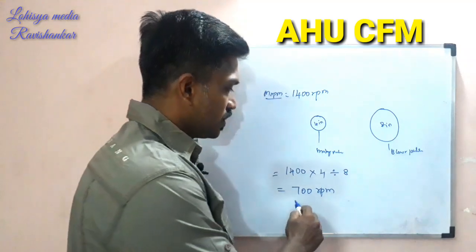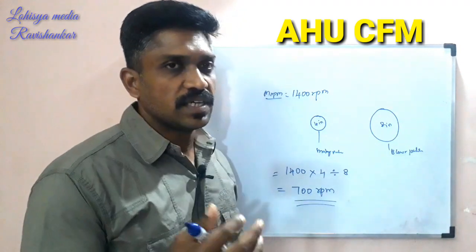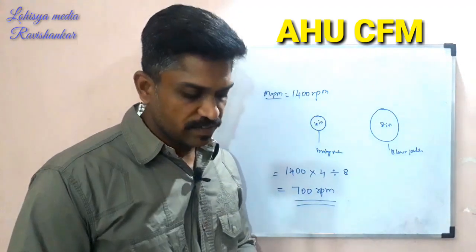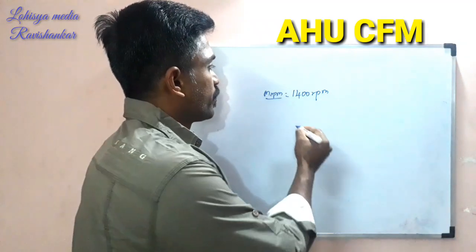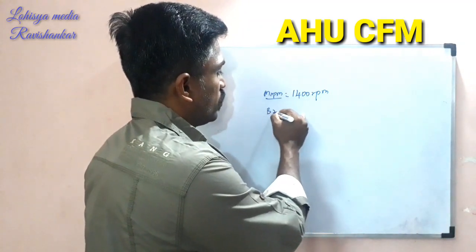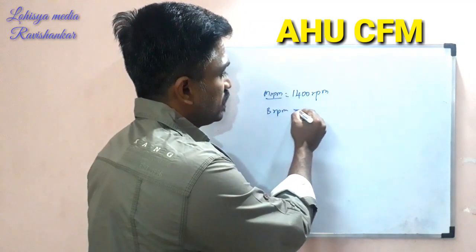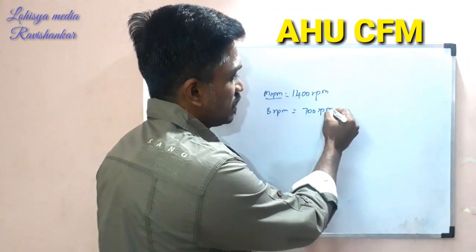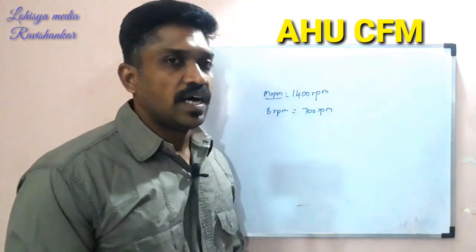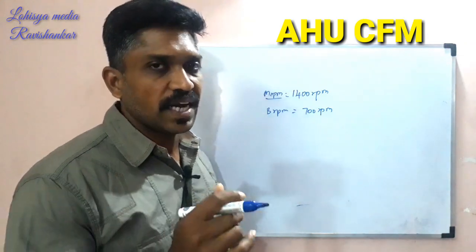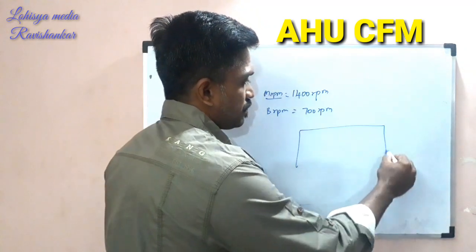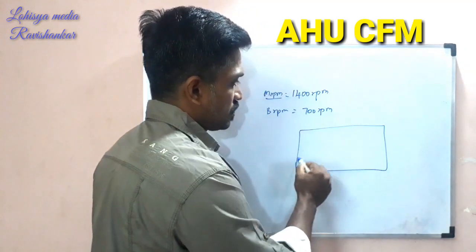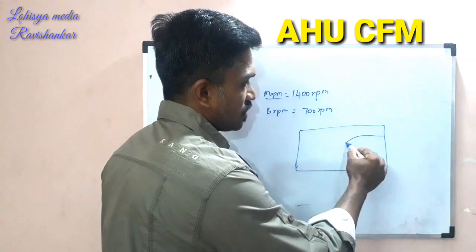Now, at 700 RPM, you will find the CFM. The blower air RPM is 700. You will find the static pressure — this is the static pressure. This is the blower.